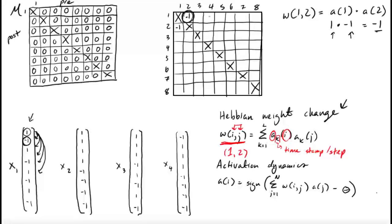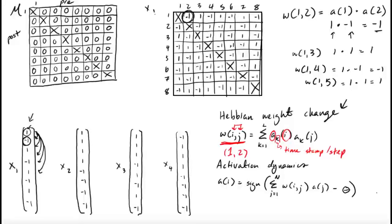Alright, so if we go down the row, the weight of 1, 3 would simply be 1 times 1, which is 1. Same thing on the other side. And so on. We do the same thing on both sides as a mirror. And then we just go like that until the entire matrix is filled. So this is what our network looks like after it has learned x1.